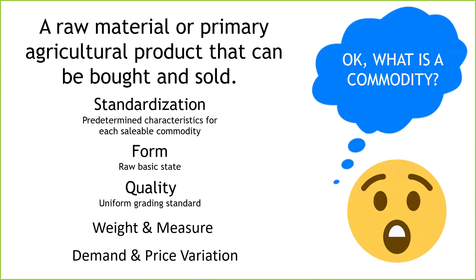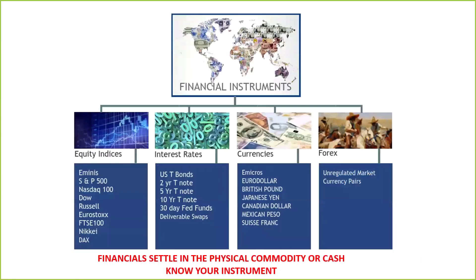Now, commodities are the original underlying instruments of futures contracts. But they are no longer the only underlying instrument of a futures contract, nor are they the best for day traders. As the world got smaller and the markets globalized, it became necessary to hedge against price changes in currency, interest rates, and other financial instruments like the stock indexes themselves.